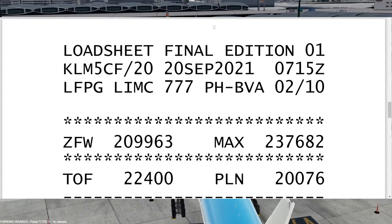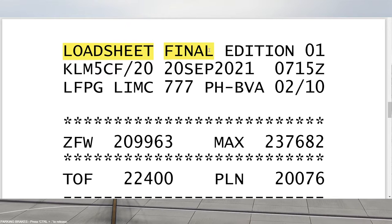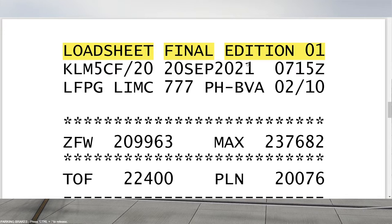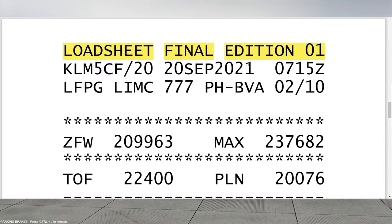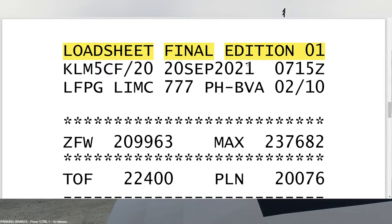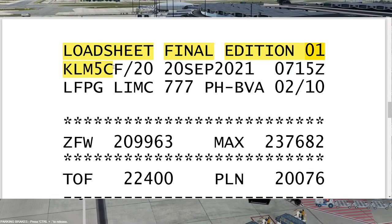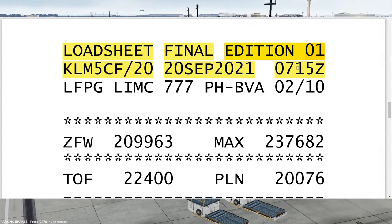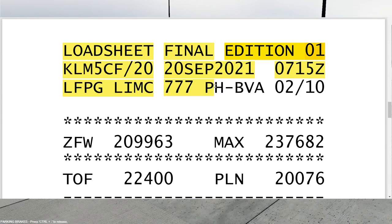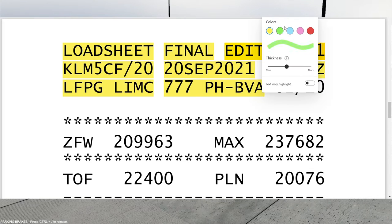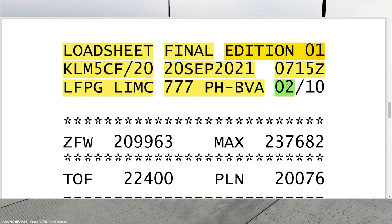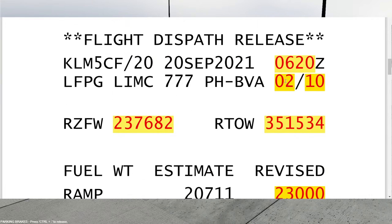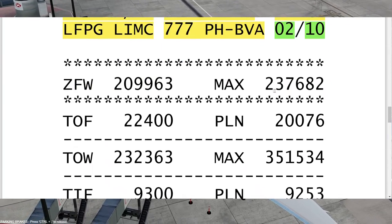This is how the final load sheet looks. It says this is a load sheet, type: final, edition: one. After loading, something might change — an extra passenger, or one person not found at the airport — so you might get edition two, three, or four. In this case we have edition number one. The same flight data: KLM 5, callsign Charlie Foxtrot, dated 20 September 2021, edition one was finished at 07:15. Same flight from Paris to Milan, on a Triple Seven, with the registration. Then comes the first information that we gave the company on the dispatch release: two and ten — same numbers we gave the company.